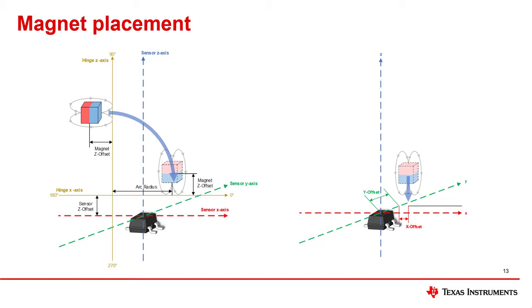Aside from the magnet's physical properties, its alignment with the device can have a profound impact on the measured magnetic flux. Such alignment specifications include the magnet offset relative to the hinge axis, the sensor offset relative to the hinge axis, the arc radius, the y offset between the magnet and sensor, as well as the x offset between the magnet and sensor, as in this example, in which the magnet is at zero degrees.